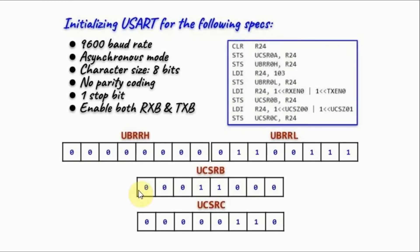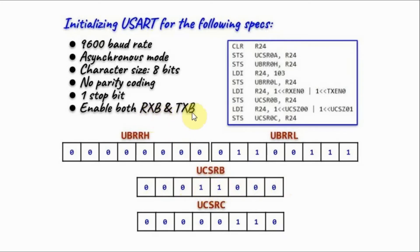Let's recap with a full initialization example for the following specifications: 9600 baud rate, asynchronous communication, 8-bit character size, no parity coding, one stop bit, with both the transmitter and receiver enabled. We program the baud rate high register with all zeros and the baud rate low register with decimal 103. Then we program register B to enable both receiver and transmitter, and register C for asynchronous mode, 8-bit character size, no parity, and one stop bit.